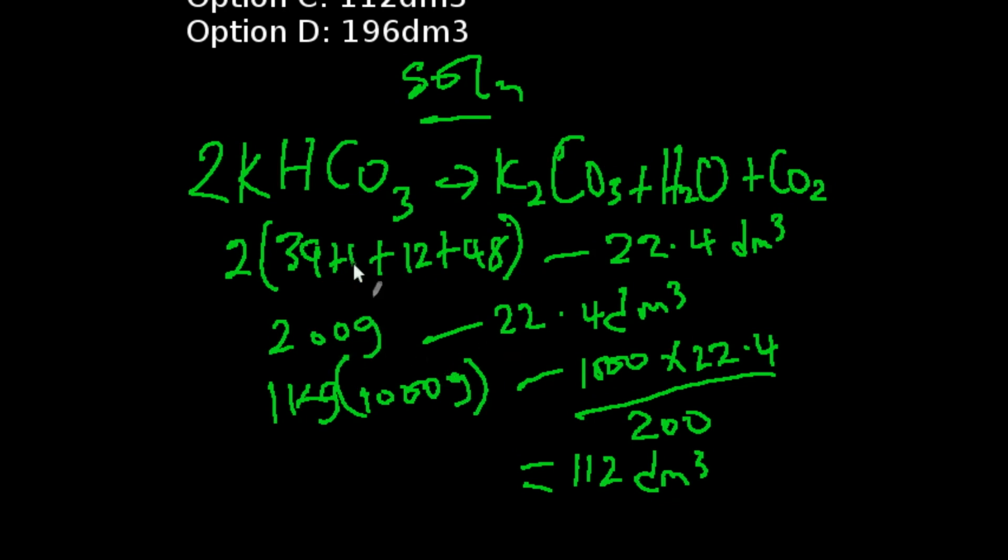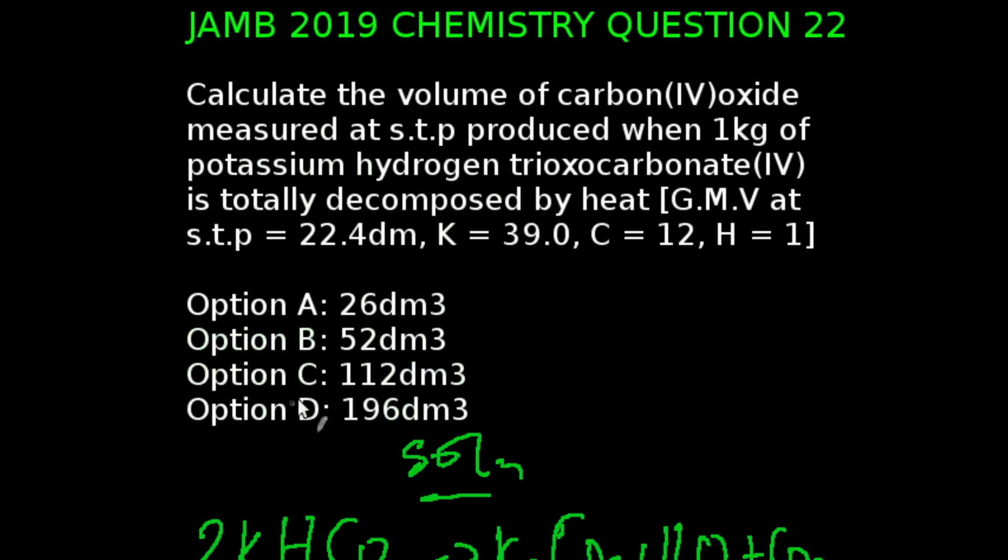That is, 200 grams of this gives us the molar volume of gas at STP. So 1 kg, which is equivalent to 1000 grams, will give us 1000 multiplied by 22.4 divided by 200, and that's going to give us 112 dm³. So our answer is Option C.